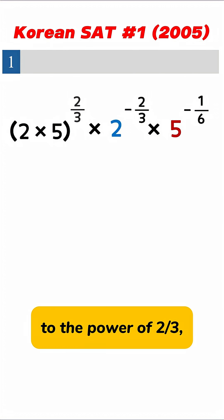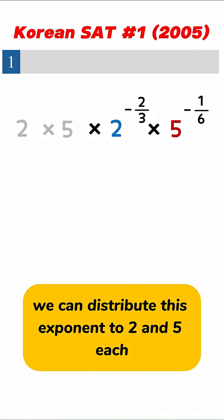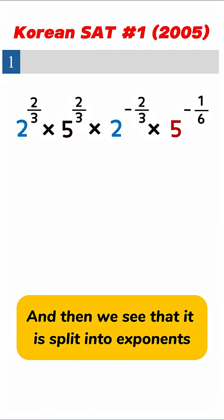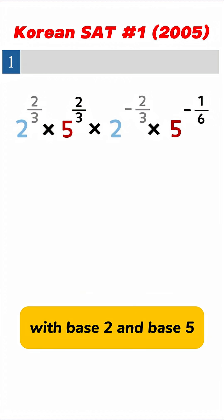If the entire thing is to the power of 2 over 3, we can distribute this exponent to 2 and 5 each. And then we see that it is split into exponents with base 2 and base 5.